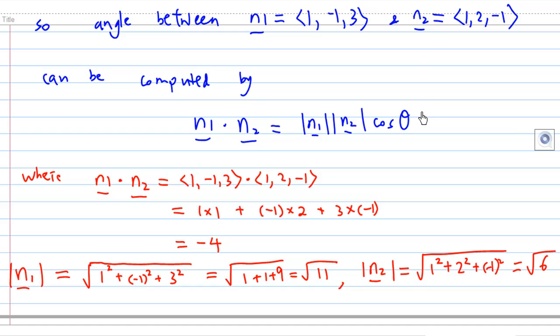Now, what is n1 dot n2? n1 is 1, minus 1, 3 and n2 is 1, 2, minus 1. So when you do the dot product: 1 times 1, minus 1 times 2, and 3 times minus 1. Add them together, n1 dot n2 is minus 4.